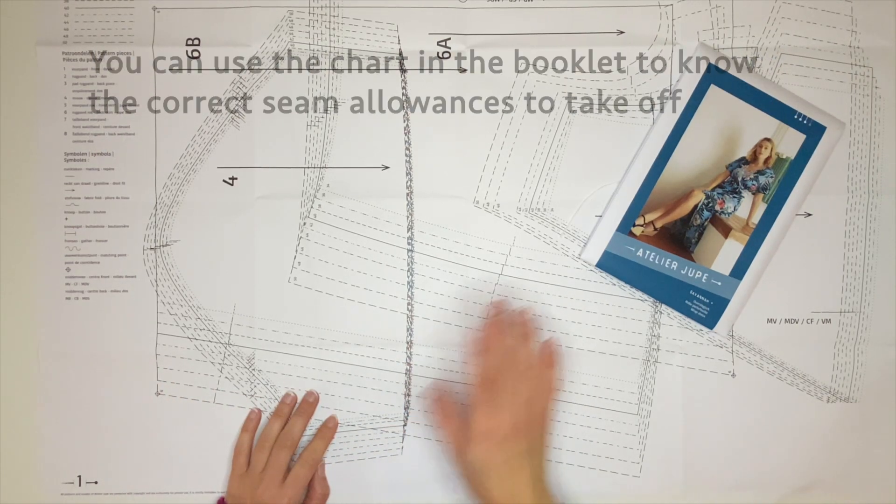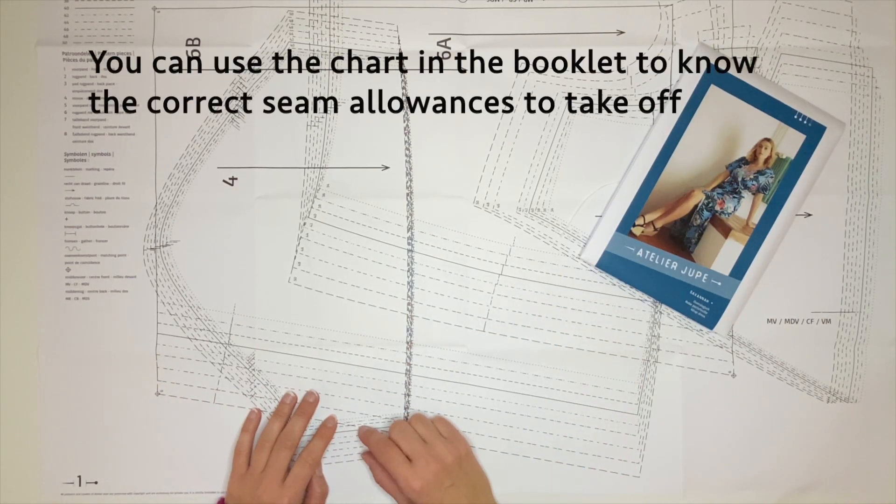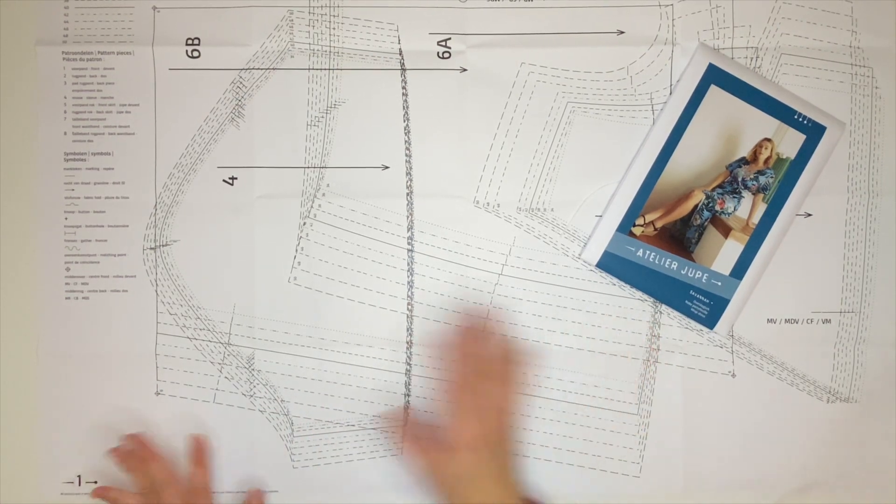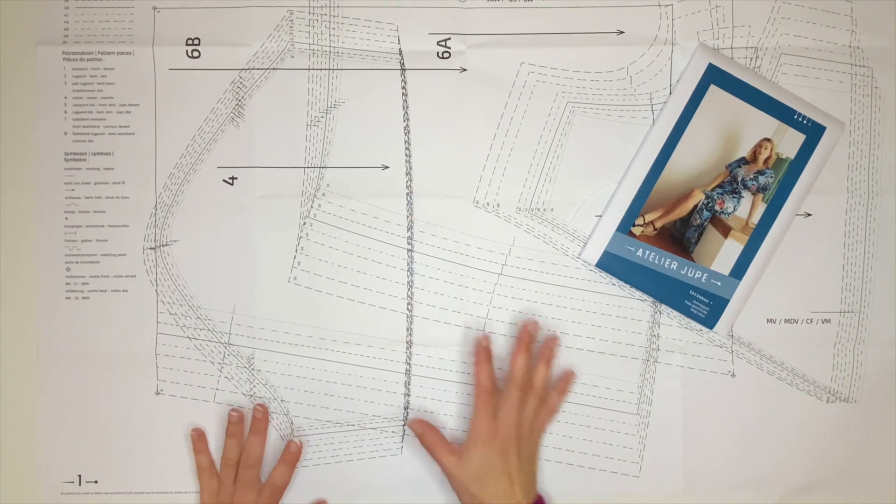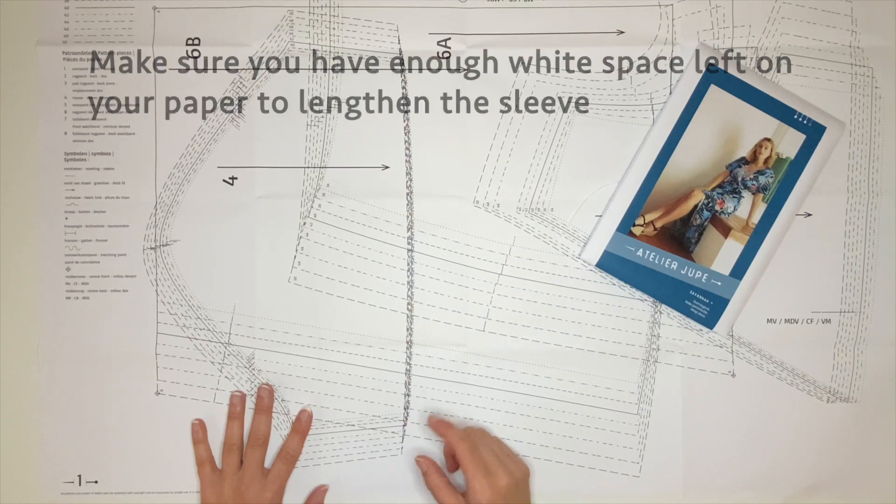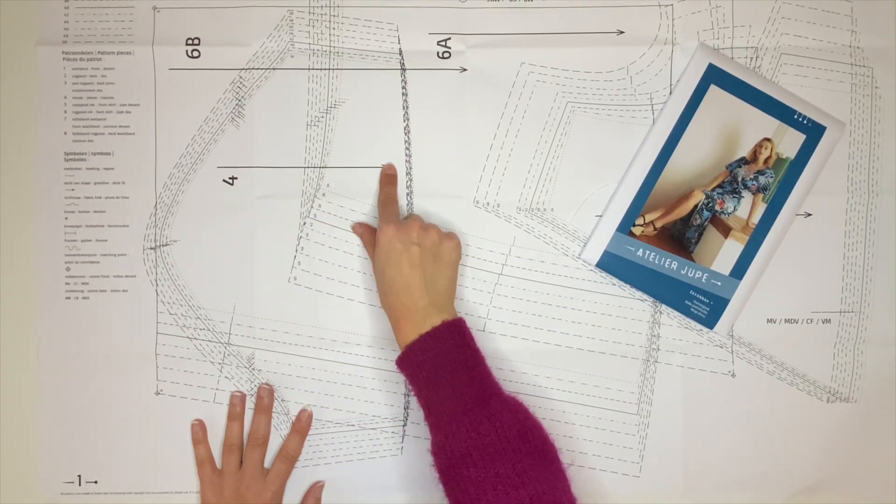It's not so difficult, you can use a chart in the booklet to see how much seam allowance is included. After you've copied the pieces, do not cut them out but leave them on a bigger paper, especially the sleeve. Make sure you have a lot of space beneath because we're going to make it longer of course. Also always indicate the green line.